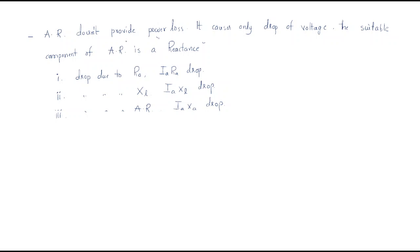The armature reaction does not produce a power loss — it only causes a drop in voltage. Because it is not related to power but only to flux, the suitable component to represent armature reaction is a reactance.